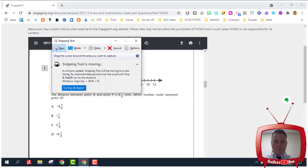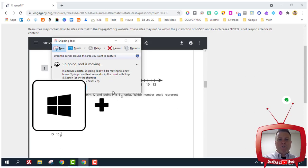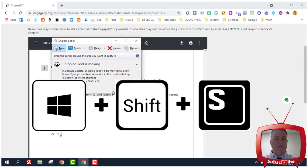So they're trying to improve the snipping tool. They're moving it to a place called Snip and Sketch, and you can also get to it by the shortcut of the Windows key, the Shift key, and the letter S all pressed at the same time.